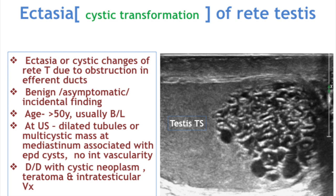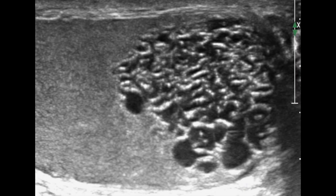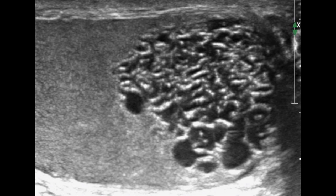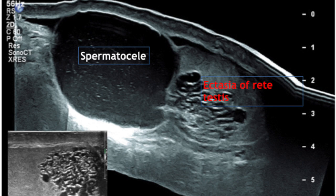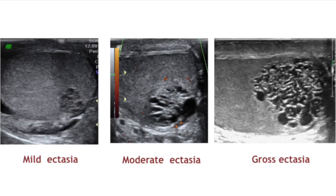Ectasia or cystic transformation of the rete testis is a diffuse dilatation or cystic change in the rete testis due to obstruction in the efferent ducts. It is a benign condition, usually asymptomatic and seen as an incidental finding, affecting elderly males over 40 to 50 years, usually bilateral. At ultrasound, multiple dilated clustered tubules or multi-cystic marks are seen in the region of the mediastinum, associated with epididymal cysts, with no internal vascularity. Three different cases show mild, moderate and gross types of ectasia of the rete testis.